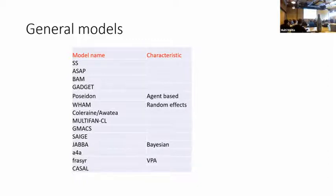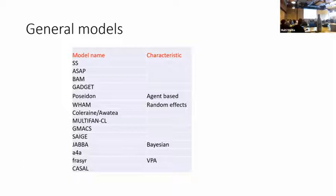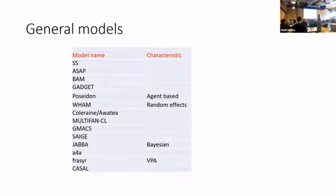I put out a survey to get information on current models and got a pretty good response — that's the list of all the models. I also got one from Anders on SAM but haven't included that in the summary yet. SAM is quite different. Poseidon is agent-based, which is quite different from standard stock assessment approaches. WHAM uses random effects as its main base, as does Anders's model — both in TMB. JABBA is Bayesian, programmed in JAGS, so it's a completely different programming language, not TMB or AD Model Builder. The Japanese software suite has VPAs, which is quite different from most other models. Some interesting results: only nine out of 14 have sex structure — and for a lot of species we know there are differences in natural mortality and growth.